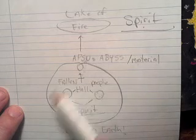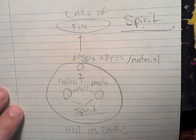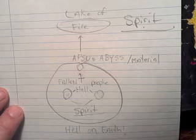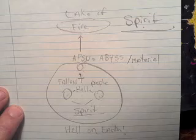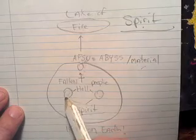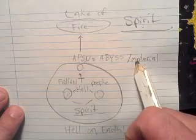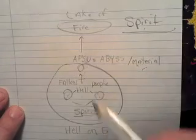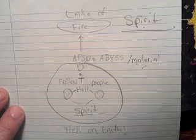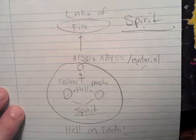The fallen are on the right side, which would represent the right eye, which represents the left hemisphere of the brain, which is the material. You would think the fallen are supposed to be enlightened and spiritual — but that's the flip of the switch. They think they're spiritual, yet they're trying to achieve a material kingdom on this world. That's why the fallen are on the right eye, representing the left hemisphere, which represents the Apsu — the North Pole — and that is the third location titled hell on the Earth.